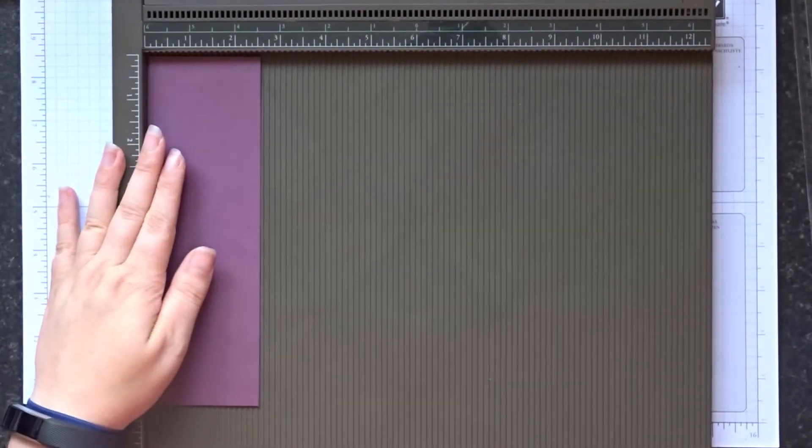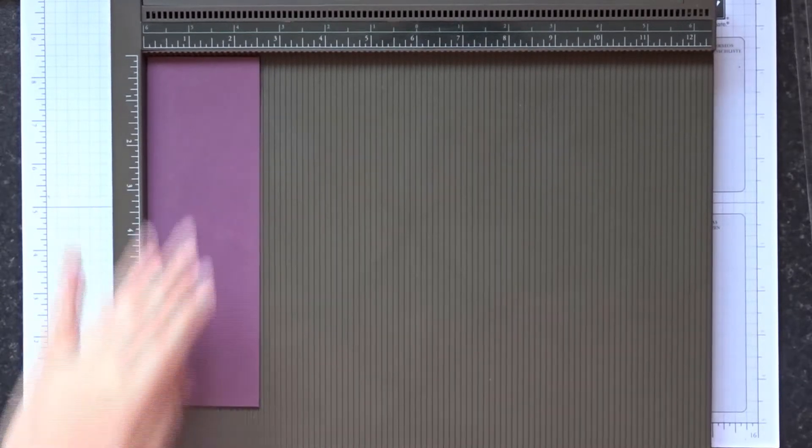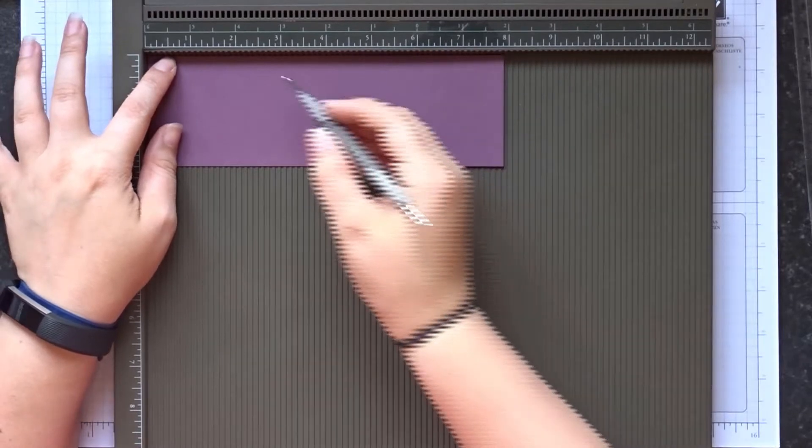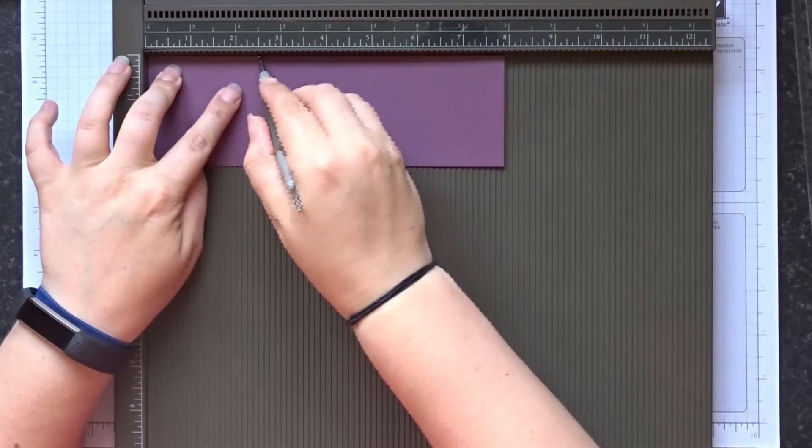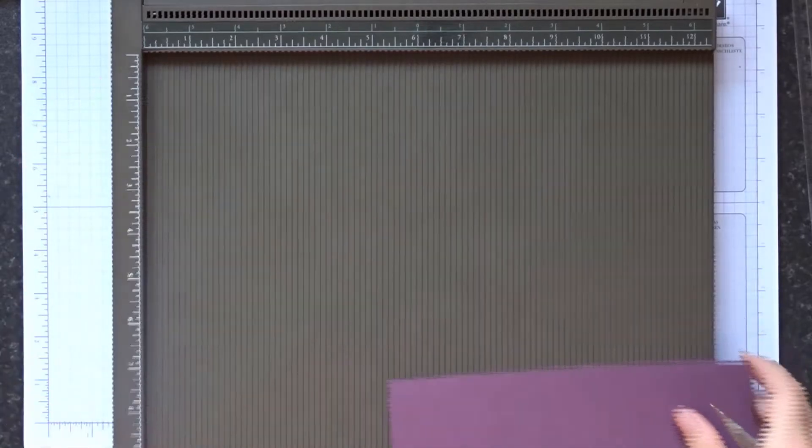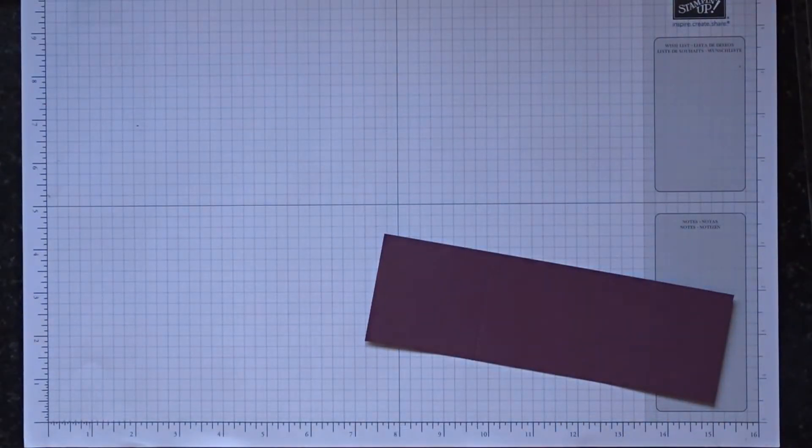I'm going to use the Eastern Palace collection. So on the long side we are going to score at two and a half inches. That's it, that's the only scoring we need. It's a very simple project.